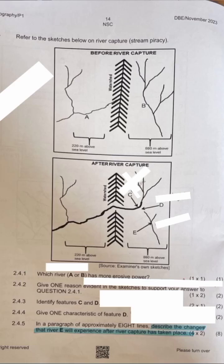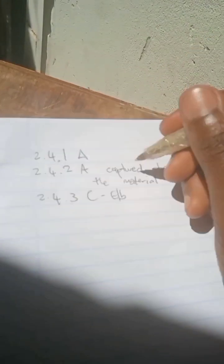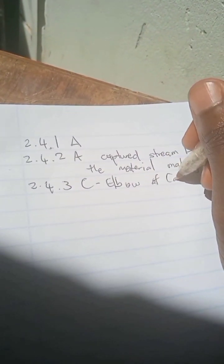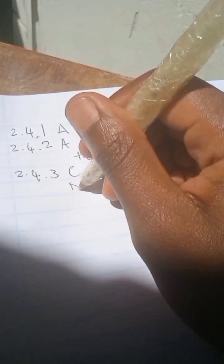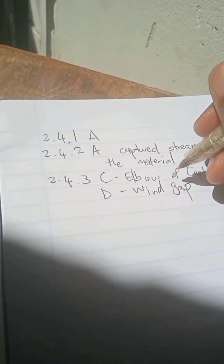For question 2.4.3, identify features C and D. Feature C is the elbow of capture — that is where the stealing occurred, where the capture happened. Feature D is the wind gap.